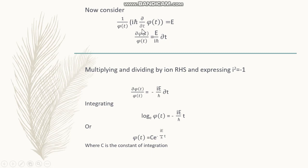Now we are going to multiply and divide by i. The right hand side is multiplied and divided with i, and then this i squared is denoted as minus 1.